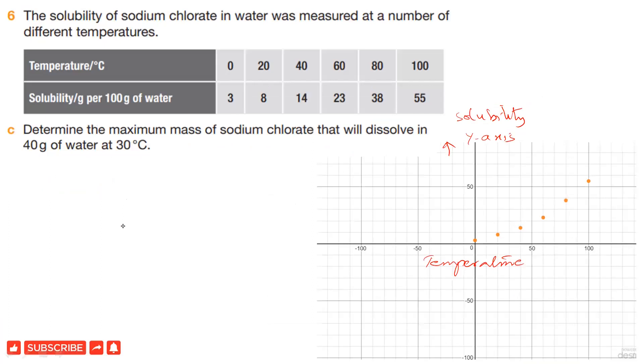Next question, part C: Determine the maximum mass of sodium chloride that will dissolve in 40 grams of water at 30 degrees Celsius. At 30 degrees Celsius, we look at the point which is joining on the vertical side, this one is joining 10. So we can say that the solubility of sodium chloride at 30 degrees Celsius is 10 grams, but this is not the required answer. We have to work a little more on it.